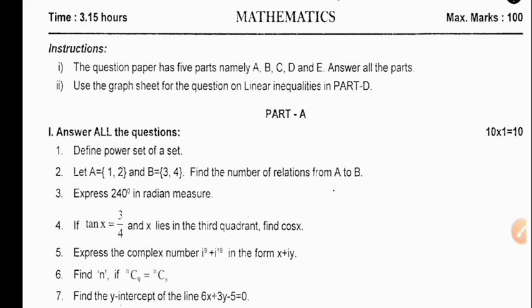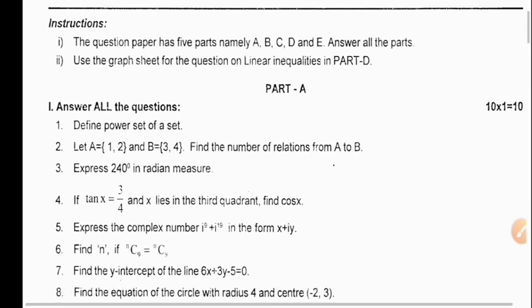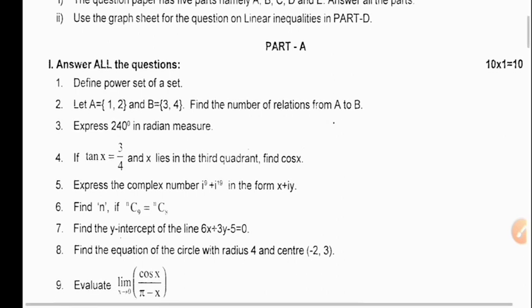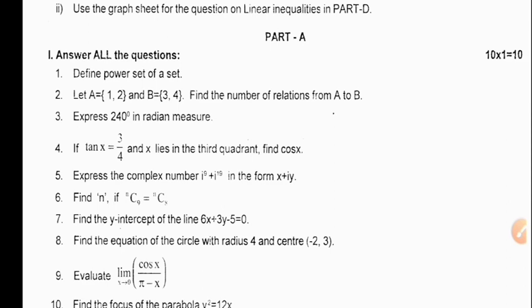It carries 100 marks. There are 5 parts: A, B, C, D, and E. In Part A, answer all the questions; each question carries 1 mark. You can see here there are 10 questions. We have to answer all the questions. For example, define power set of a set — like that, there are 10 questions.